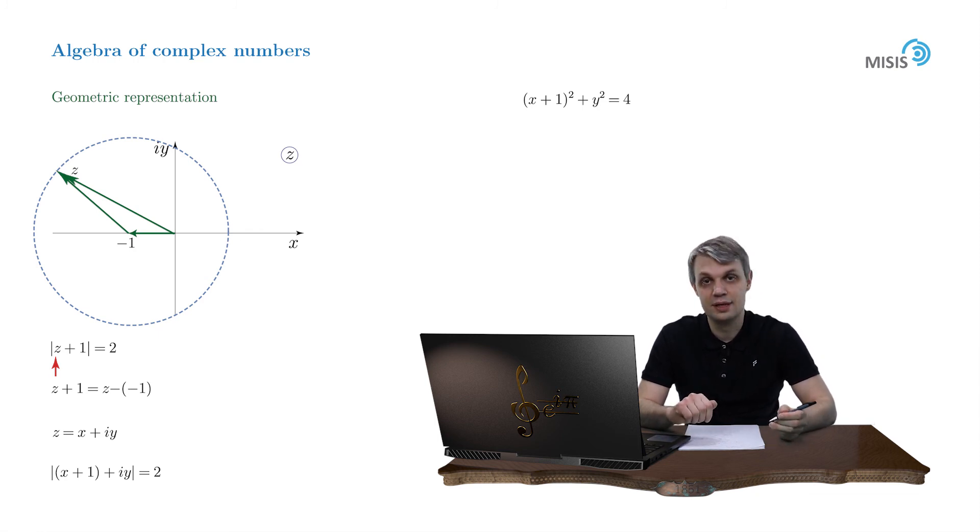But the geometric solution seems to be more elegant. And on our next slide, we'll introduce a new representation of a complex number, which is called a trigonometric form. And we will explain how it is related to just discussed geometrical representation.